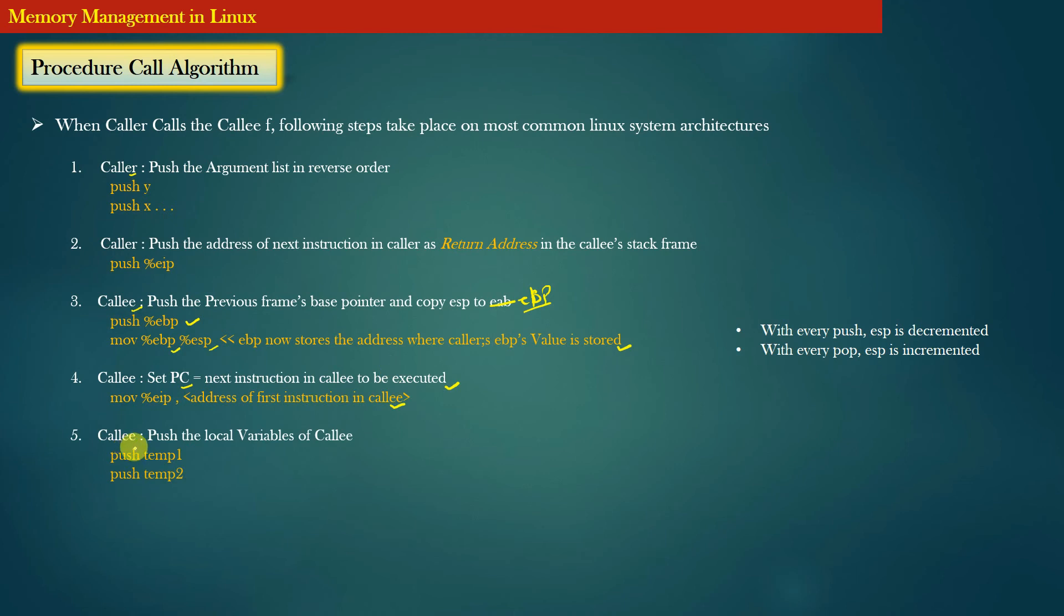And now in the final step, it is the callee's responsibility to push the local variables of callee function, that is its own variables, into the stack memory. And finally in step 6, the callee's stack frame has been completely set up and now it can execute its logic.